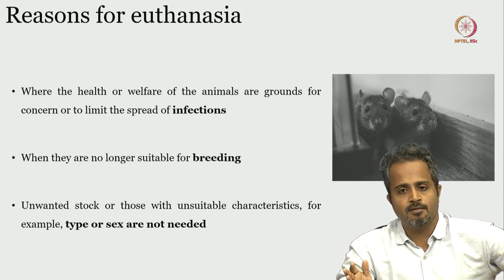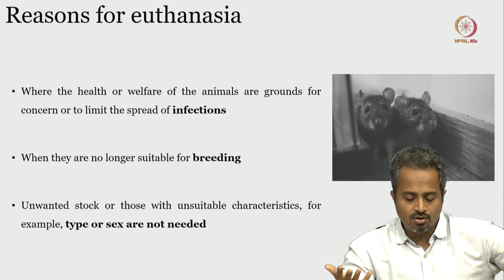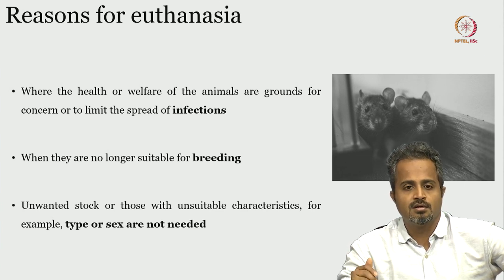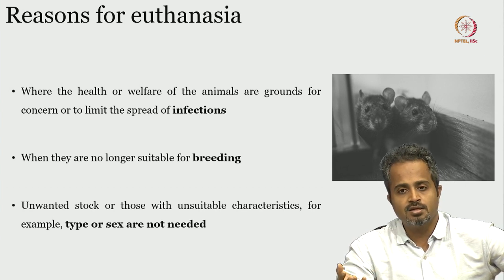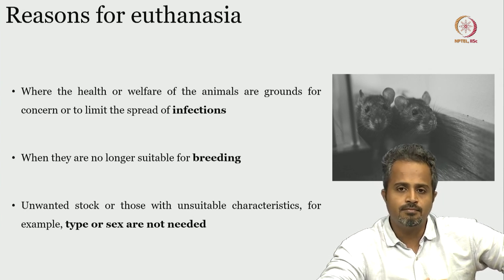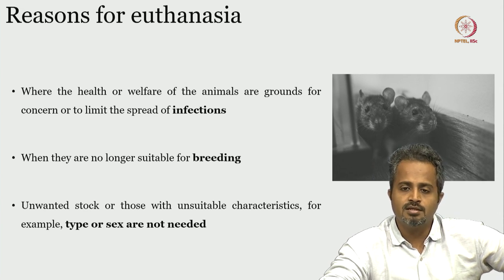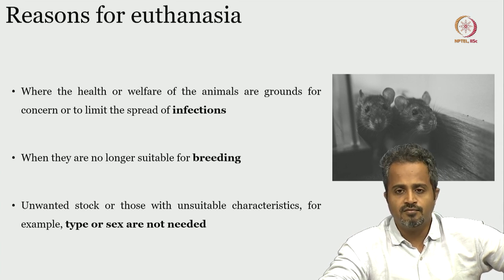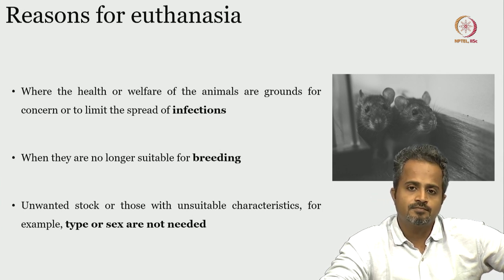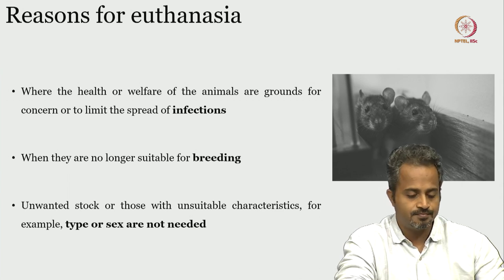When animals are no longer suitable for breeding, that is another reason euthanasia is considered. Unwanted stock or those with unsuitable characteristics — for example the type or sex of the animal not needed — are generally euthanized. These are lab animals brought into the lab atmosphere and for some reason not ideal for experiments, so instead of letting them survive, they are euthanized to save lab resources and to limit chances of acquiring disease and endangering the safety of other lab animals.